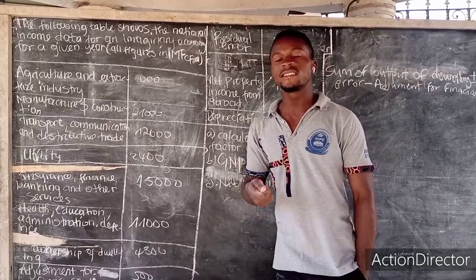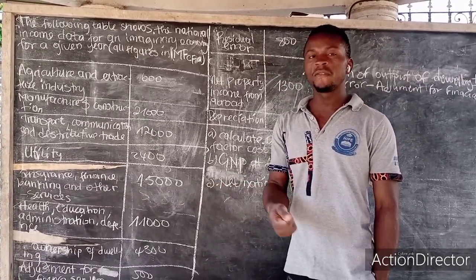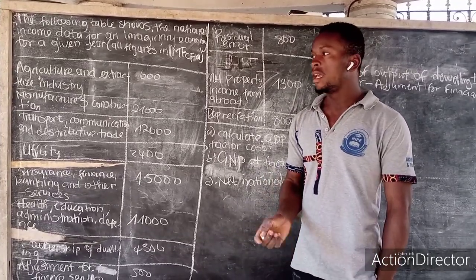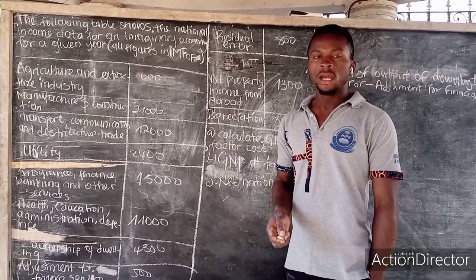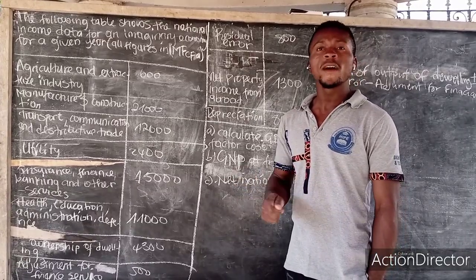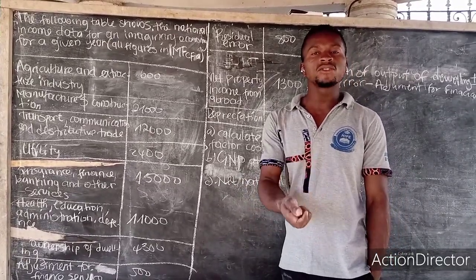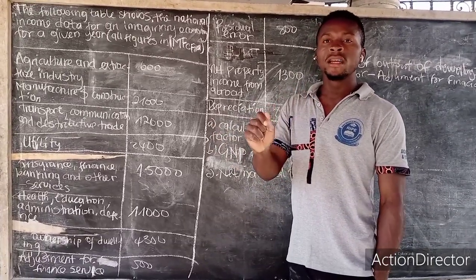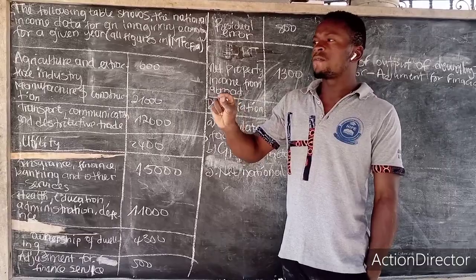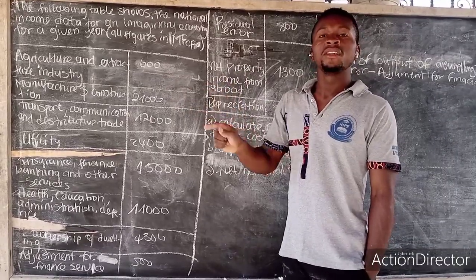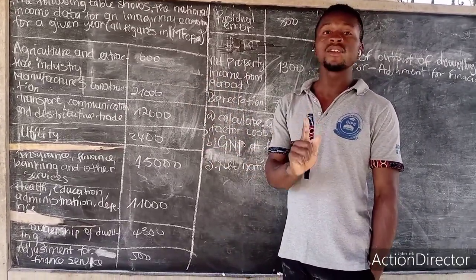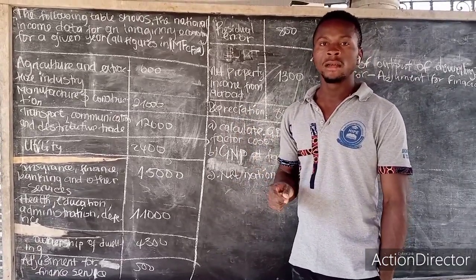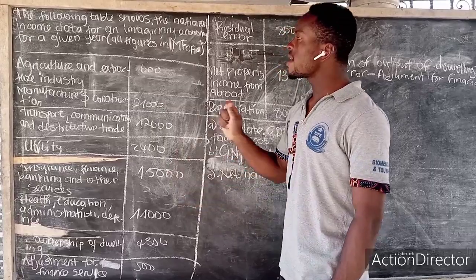It is a question a student sent to me last night. I decided to put up a video today so that I can help not only the student in carrying out a calculation. Calculation sometimes is the most difficult part in national income where students run away — not because it is difficult, but because of the calculation part. Remember, when you miss out a figure during the calculation period, you have missed everything as far as that question is concerned.